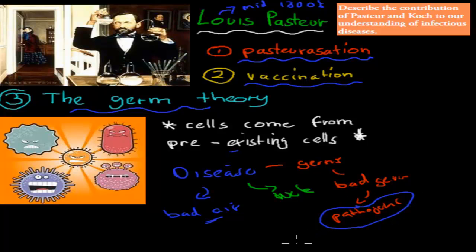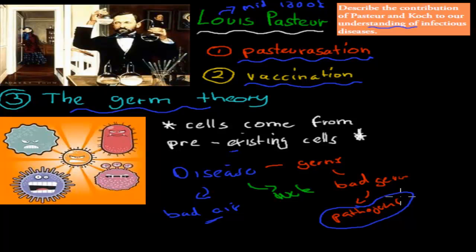Pasteur said that pathogens were the ones which actually cause our disease - not bad air or bad luck, but pathogens which we can't see that might invade our body and cause disease. He proved this with an experiment we'll cover in the next video. So remember: he came up with pasteurization and vaccinations - two really important breakthroughs - but his most important contribution to our understanding of infectious disease was his contribution to germ theory, and his understanding that cells come from pre-existing cells.